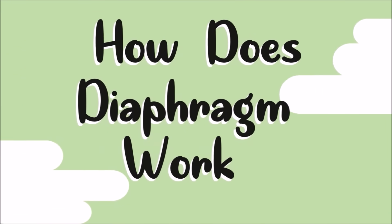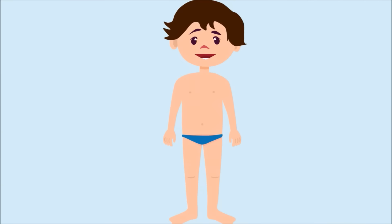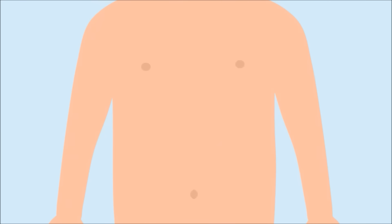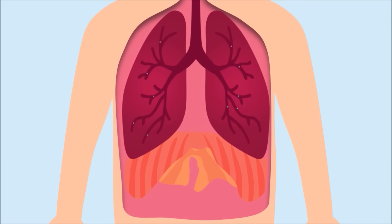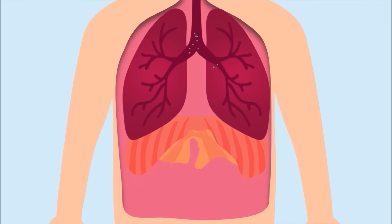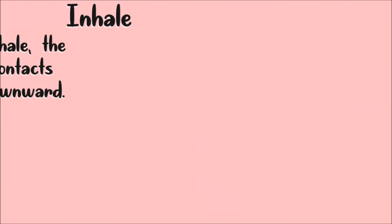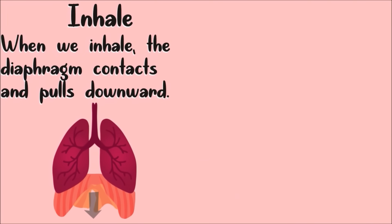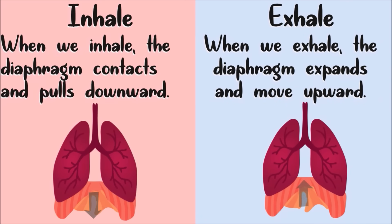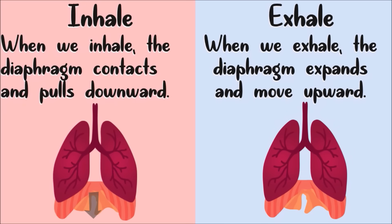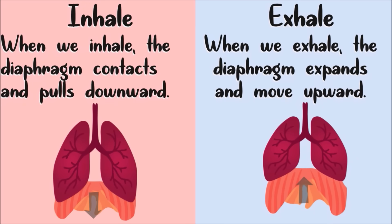Now let us describe how the diaphragm works. During respiration, the diaphragm flattens out and pulls forward, making more space for the lungs. When we breathe in, or inhale, the diaphragm contracts and pulls downward — this movement increases the space in the lungs, which pulls air into them. When we exhale, or breathe out, the diaphragm expands and returns to its normal resting position, moving upward. This movement reduces the space for the lungs and forces air out.